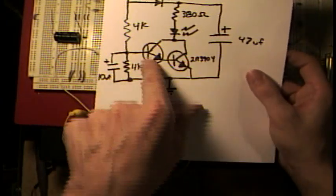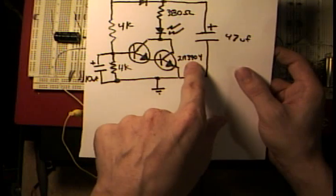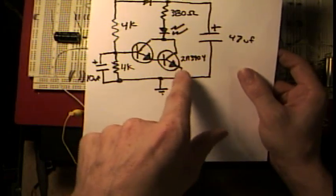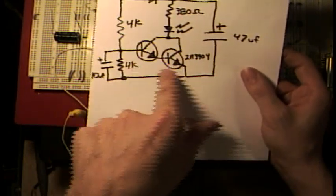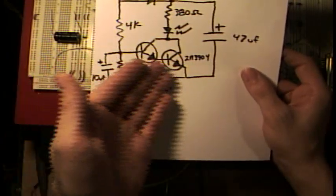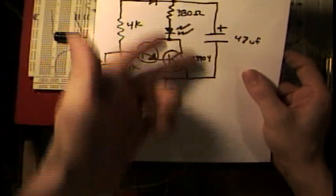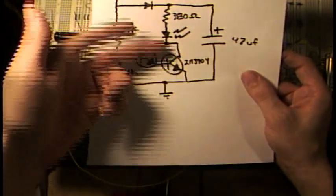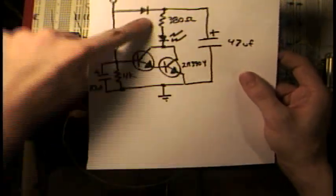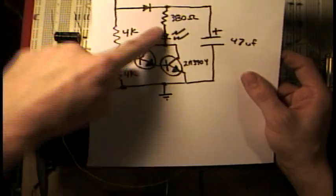Here we have a Darlington pair, which I just built them out of 2N3904 NPN transistors. This is a high gain circuit that doesn't take very much current to turn on a voltage path through this LED. We have a current limiting resistor here so we don't burn out the LED.